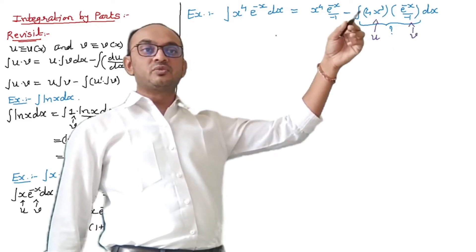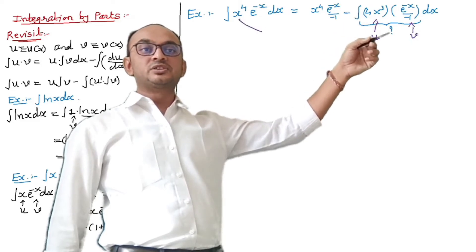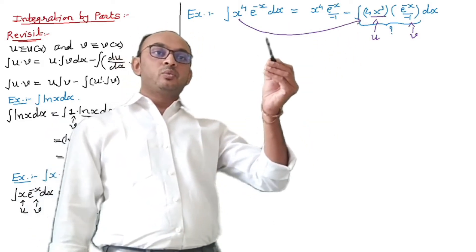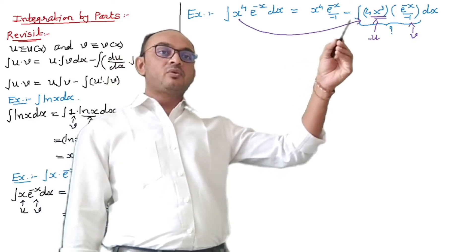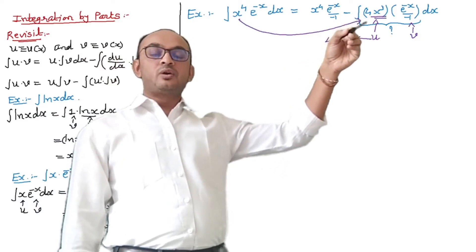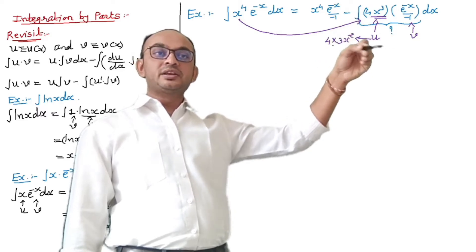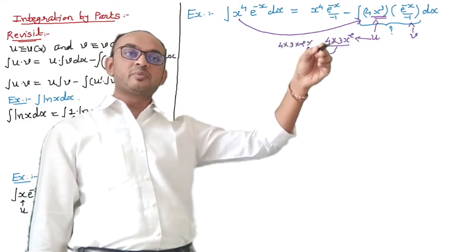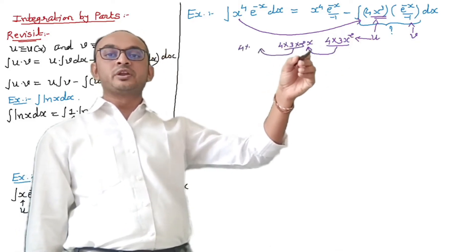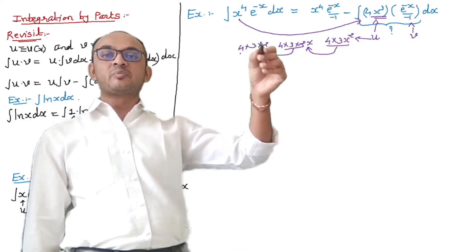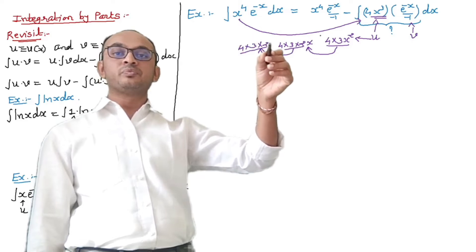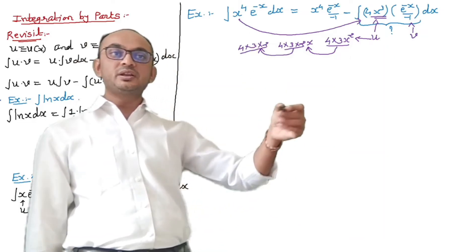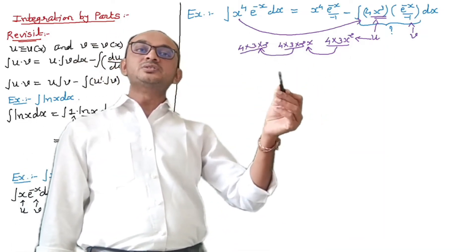We set u as x^3 and v as e^(−x) for the next application. What is happening: the first application differentiates x^4 to get 4x^3. Applying integration by parts again differentiates 4x^3 to get 4·3x^2. Applying once more gives 4·3·2x, then 4·3·2·1, then zero. So we have to apply integration by parts at least four times.